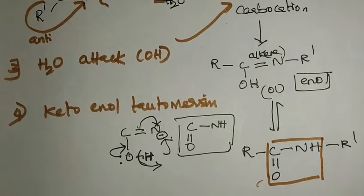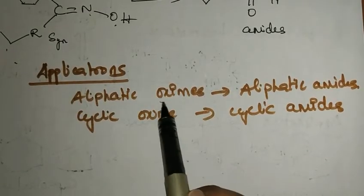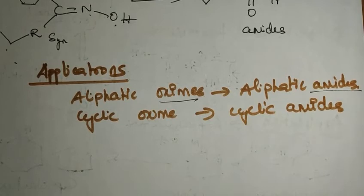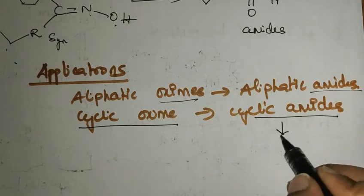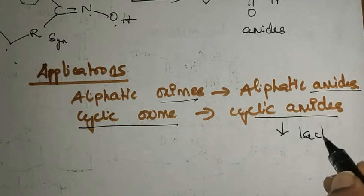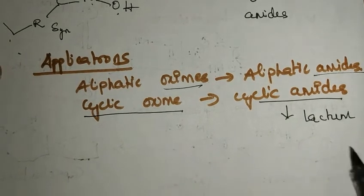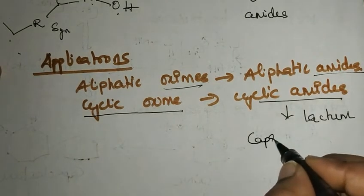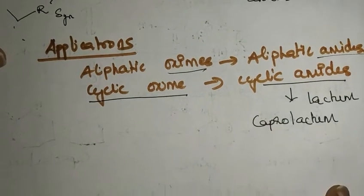Now we will see some important applications and stereochemistry of the reaction. An important application is the conversion of oximes to amides. Even cyclic oximes can be converted to cyclic amides, and cyclic amides are called lactams. A very important example is the synthesis of caprolactam.